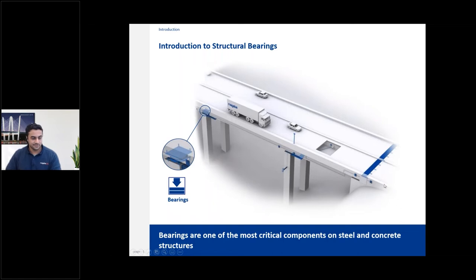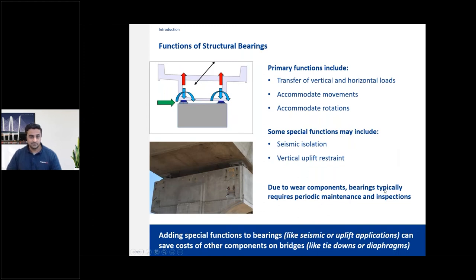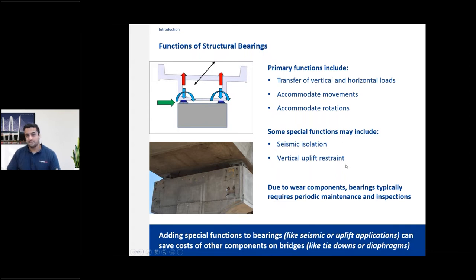Bearings are the most critical components on bridges, buildings, and infrastructure. They primarily transfer vertical and horizontal loads, accommodate movements, and most importantly accommodate rotations — otherwise you could just use a piece of brick. Special functions include acting as vertical uplift restraints or providing seismic isolation using lead rubber bearings, high damping rubber bearings, or pendulum isolators. Because bearings have wear components like sliding materials, rotational polyurethane discs, or elastomers, they typically require periodic maintenance and inspections.